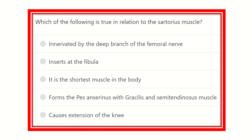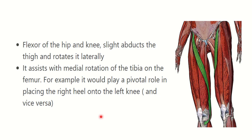Which of the following is true relating to the sartorius muscle? The options are: it is innervated by the deep branch of the femoral nerve; it is inserted at the fibula; it is the shortest muscle of the body; it forms the pes anserinus with gracilis and semitendinosus muscles; or it causes extension of the knee.